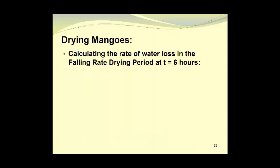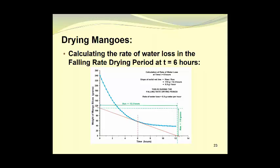We can now calculate the rate of water loss in the falling rate drying period, and for this we will do it at 6 hours. Here is the curve once again, and we have drawn a tangent to the curve at 6 hours. This is indicated by the solid red line, which extends from the far left of the graph to the bottom right of the graph. We can find two points on this solid red line which will allow us to get a rise, which is 110 grams, and a run, which is 12.3 hours. So the slope of the solid red line will equal the rise over the run, which is 110 grams divided by 12.3 hours, which gives us 8.9 grams of water being removed on an hourly basis. And as indicated here, you can see that the rate of water loss is 8.9 grams of water per hour.